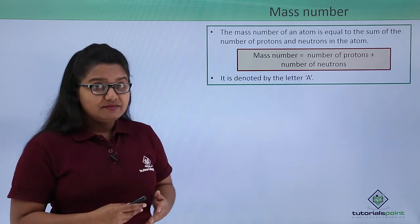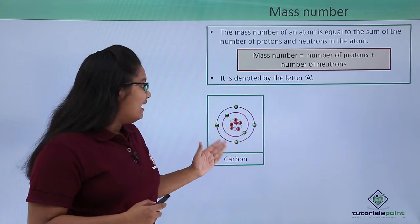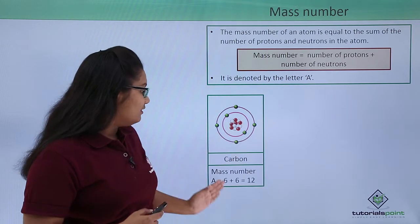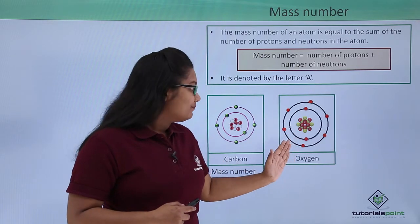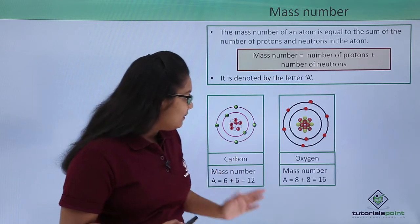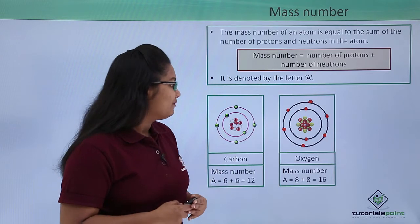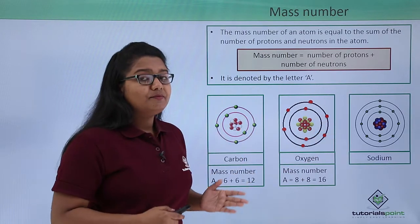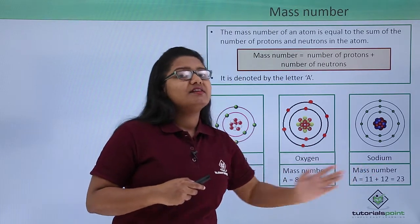Let us take some atoms and find their mass numbers. For a carbon atom, it has 6 protons and 6 neutrons, which add up to give a mass number of 12. For an oxygen atom, it has 8 protons and 8 neutrons, so 8 plus 8 equals 16, which is the mass number of oxygen. For a sodium atom which has 11 protons and 12 neutrons, the mass number becomes 11 plus 12, which is 23.